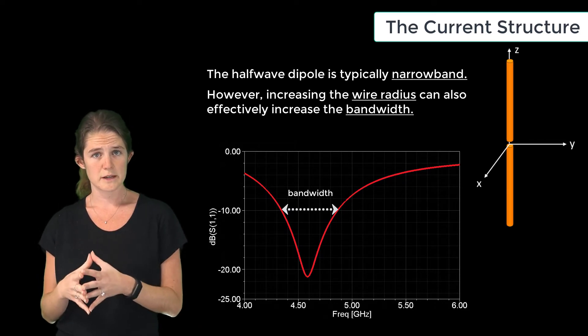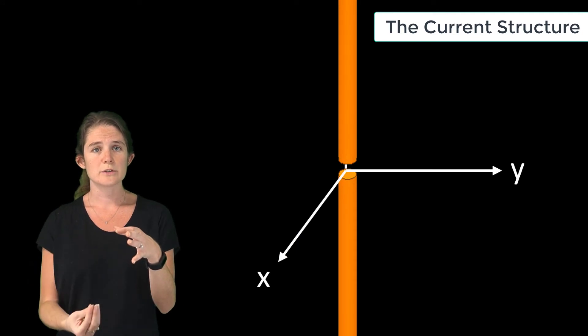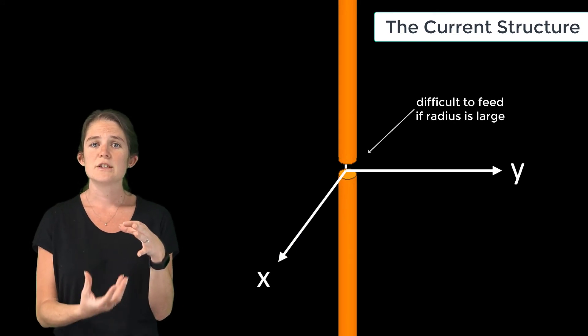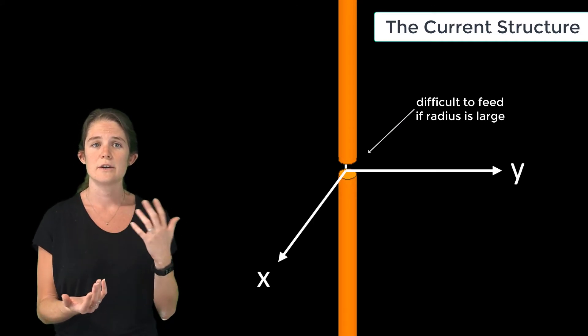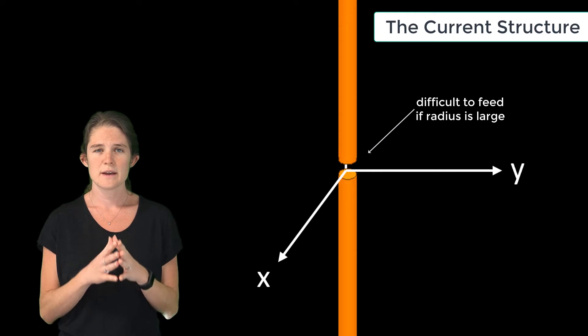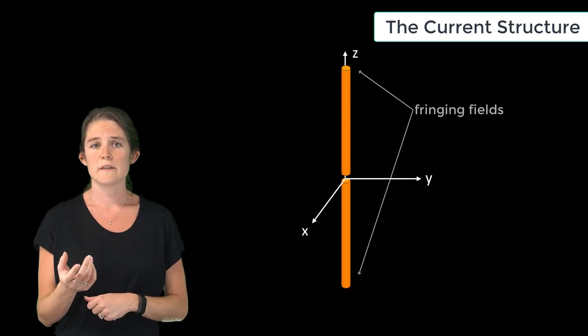The first and more significant of the two is that the larger the radius is, the more difficult it is to efficiently feed the antenna and achieve a smooth and even transition of current from your feed line onto the body of the antenna. A secondary trade-off is that the larger the radius of the antenna is, the more strongly the antenna is affected by fringing fields.